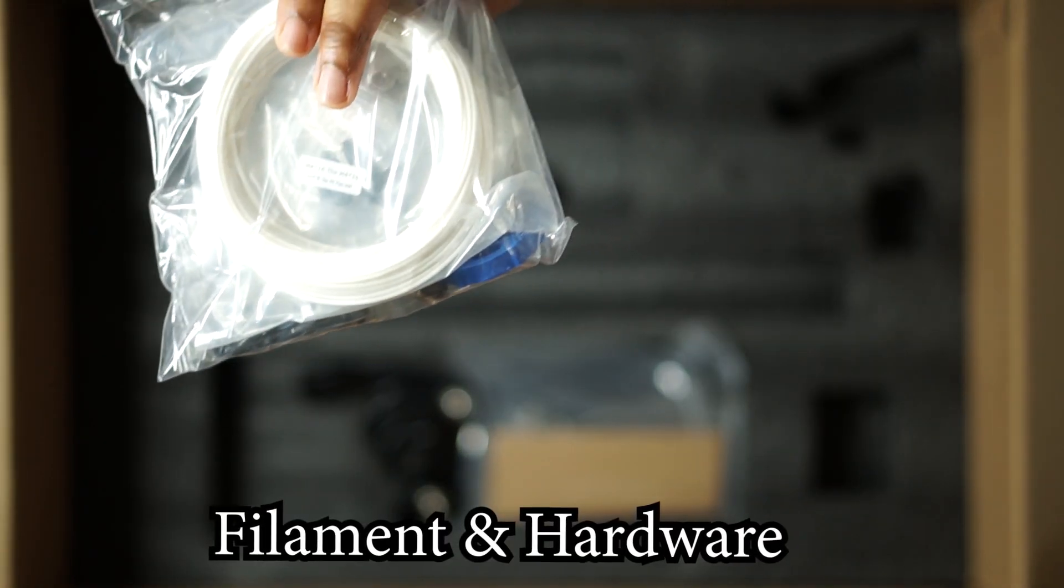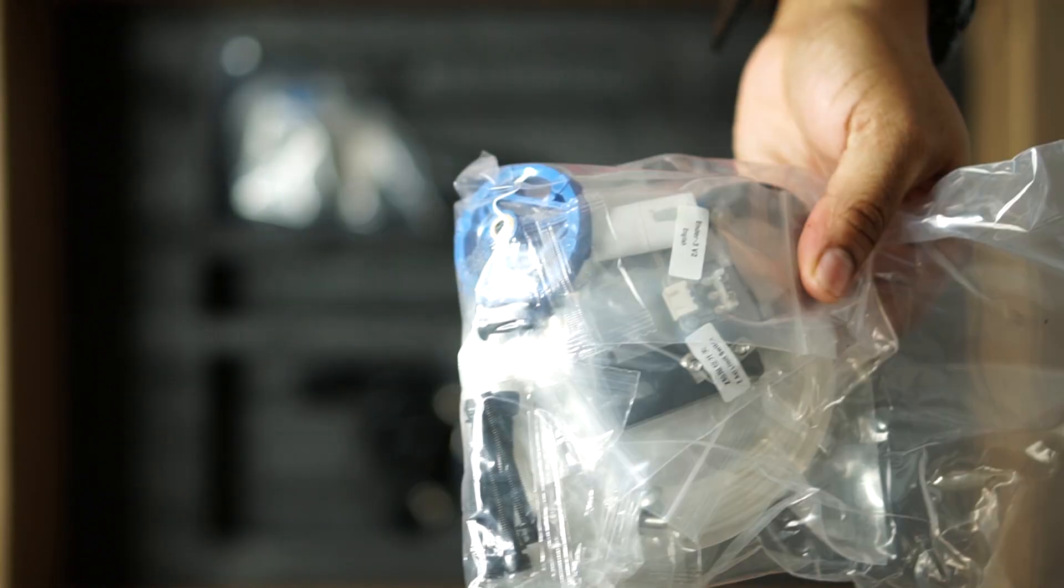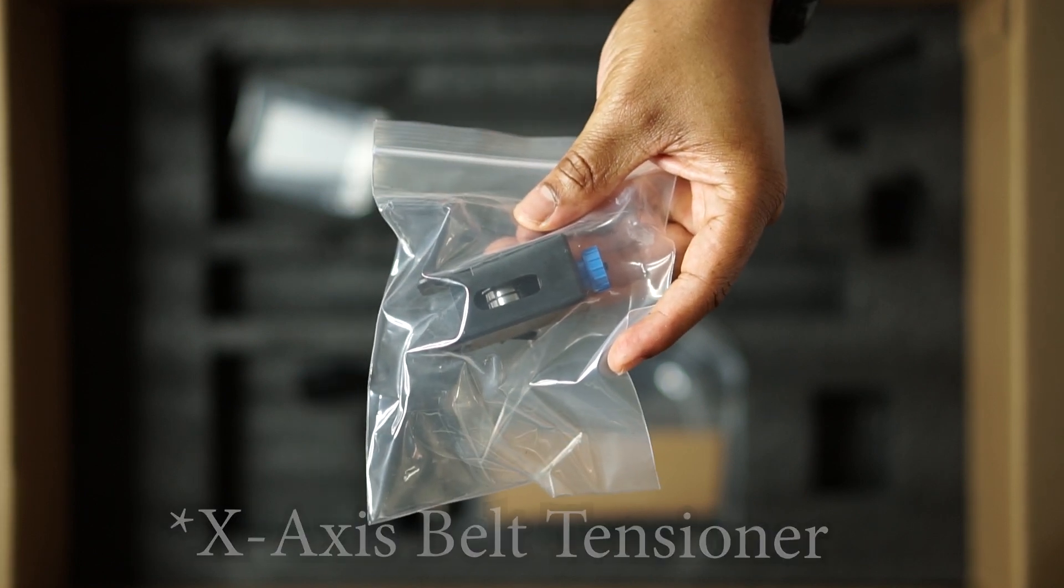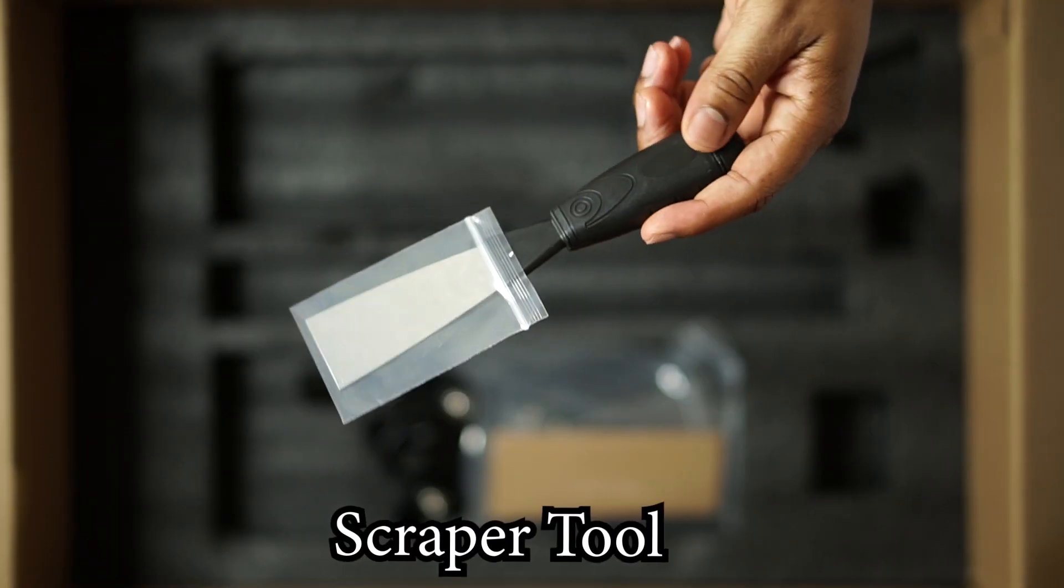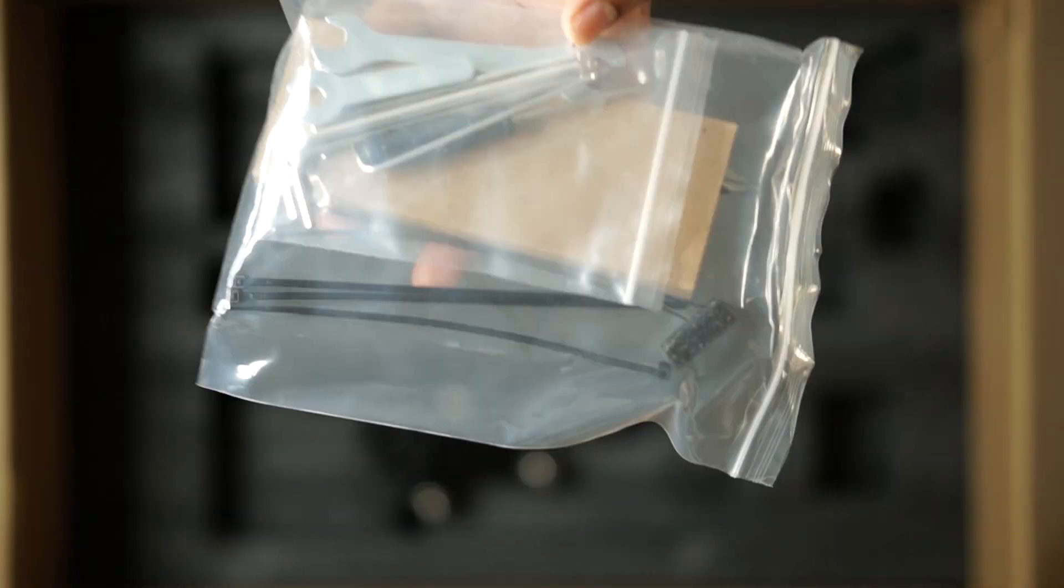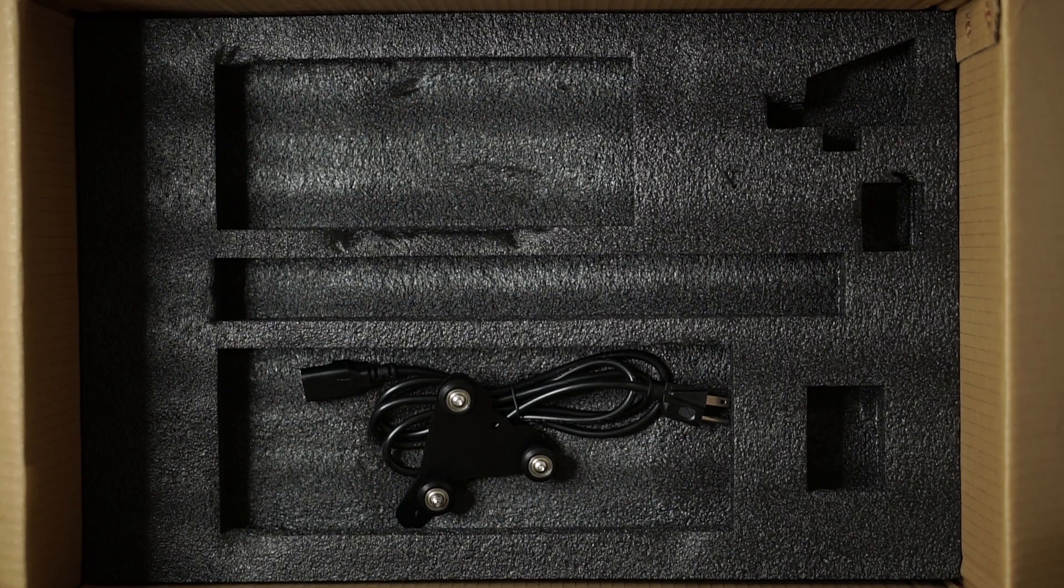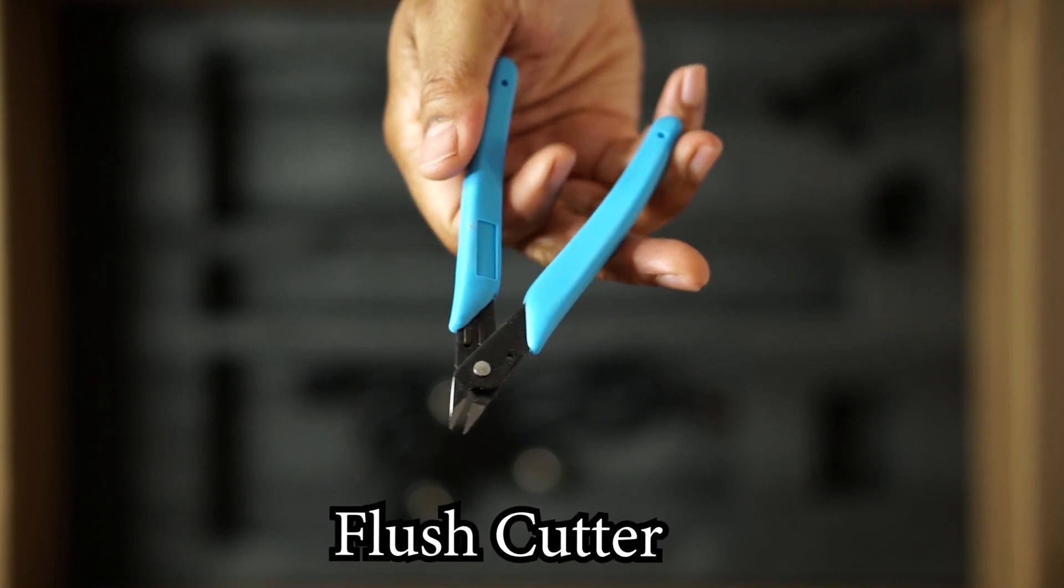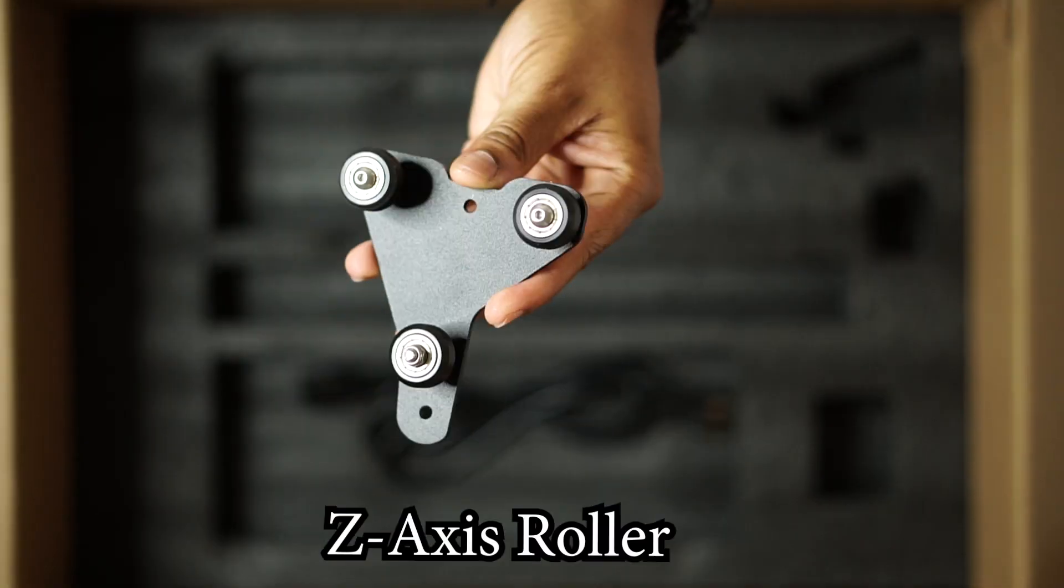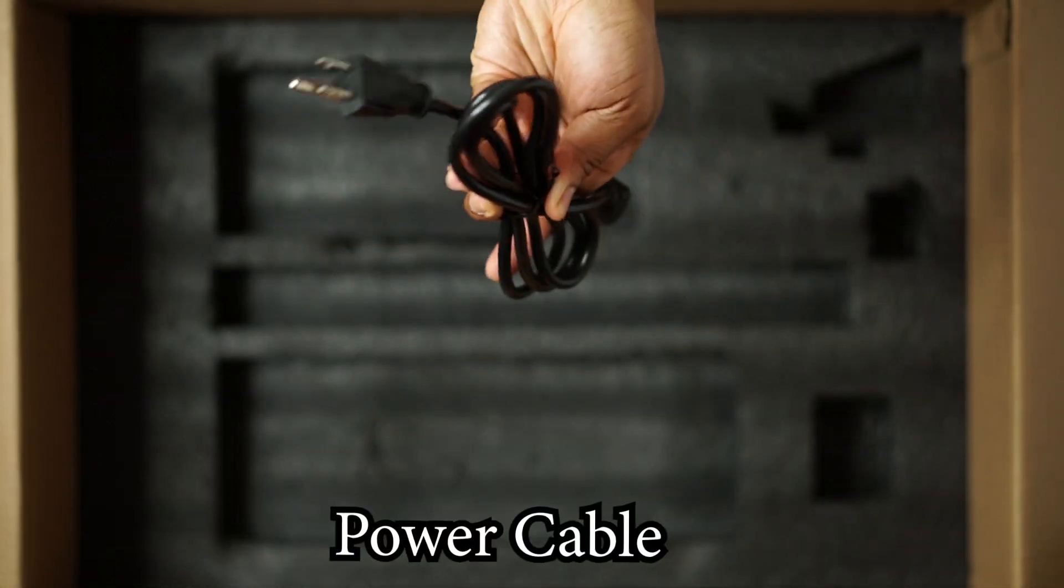In this bag you have some sample filament, it's actually a nice amount, and you also have your screws and other things you'll need to assemble. Here's your z-axis tensioner. You also get a scraper for removing your prints if needed. In this bag you have all your tools that you need for assembling your printer. Included with that is a pair of flush cutters which is going to be very useful in your printing, and here's your z-roller and last you have your power cable.